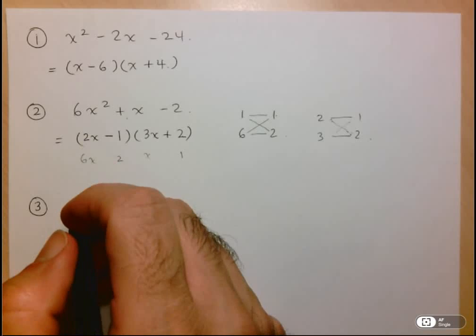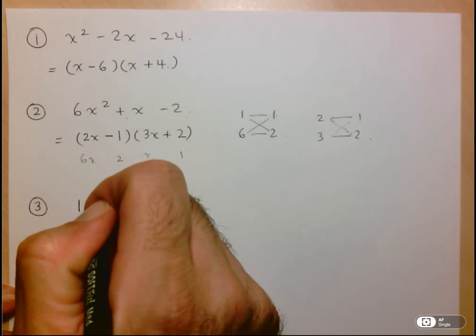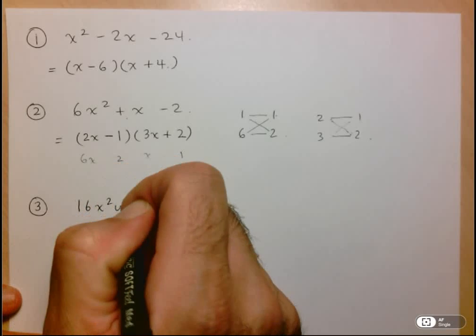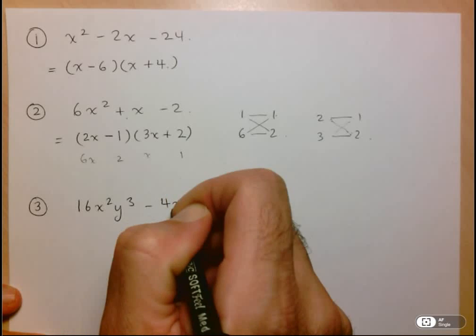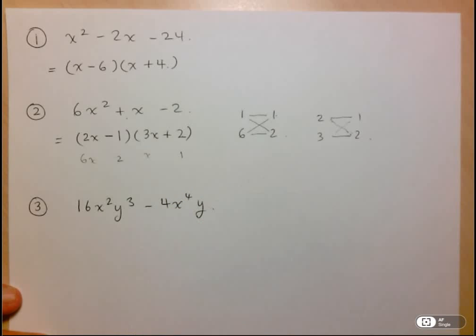Let's move on to another example. So say I've got 16x²y³ - 4x⁴y. Now here we come on another type of factor which we haven't talked about yet, which is the idea of common factoring. This might look like quite a complex expression, but I notice here that there's a lot of common factors that can be factored out.